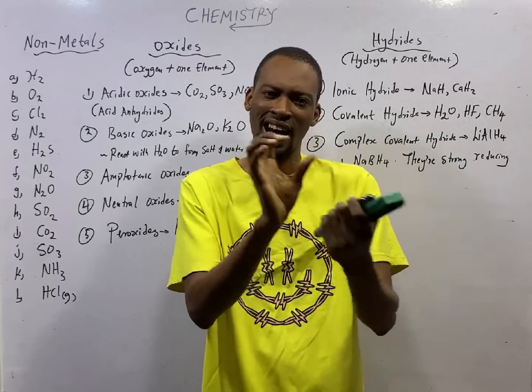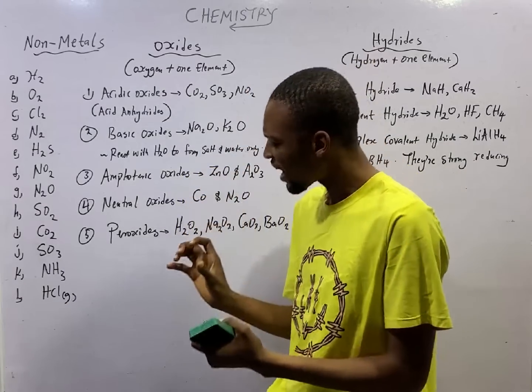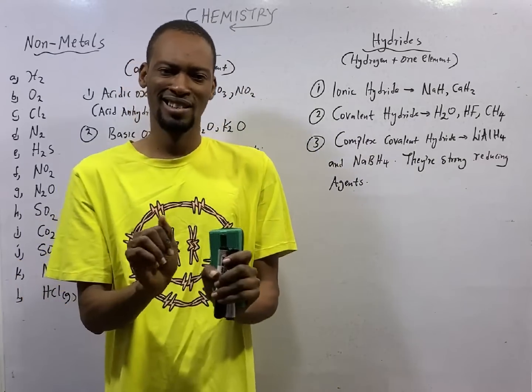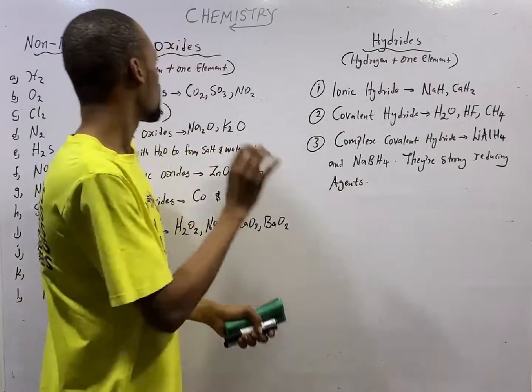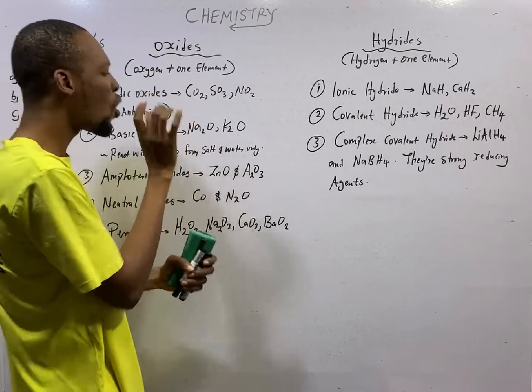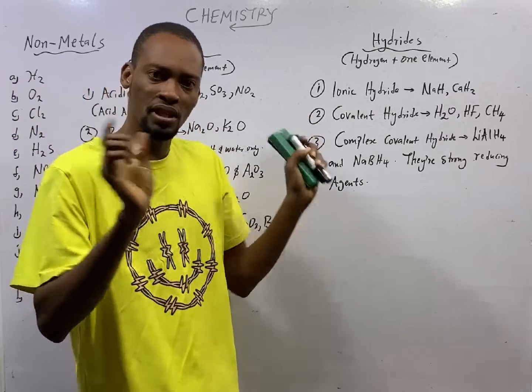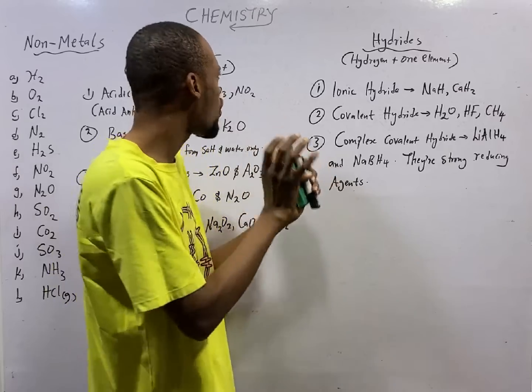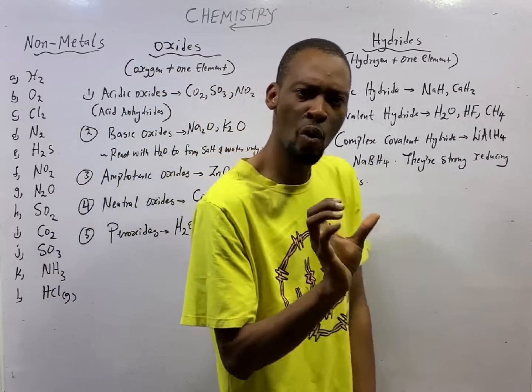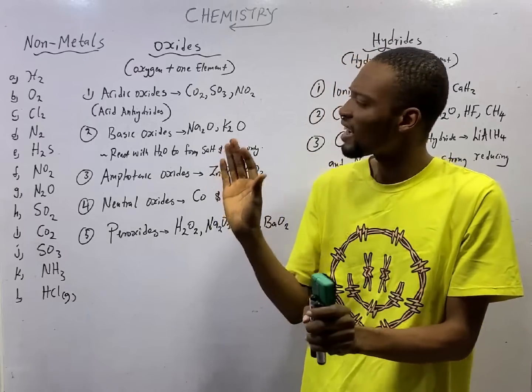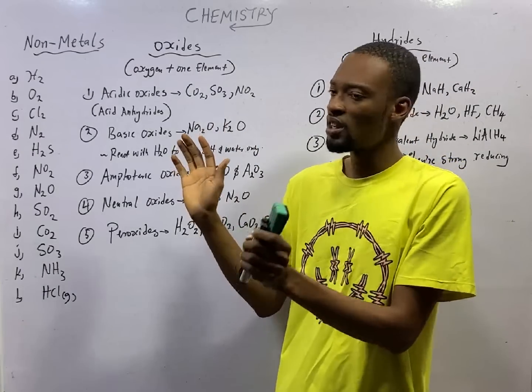Oxides and hydrides. What are oxides and what are hydrides? When oxygen combines with one other element only, we form oxides. Which means oxides are compounds formed when oxygen and one other element combine.